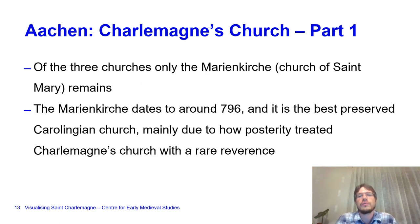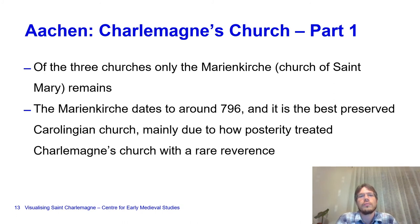Of the three churches, only the Marienkirche, the church of Saint Mary, survives; the other two have disappeared almost completely. The Marienkirche dates to around 796 and is the best-preserved Carolingian church. This is due to how posterity treated Charlemagne's church with rare reverence—whereas elsewhere they would have torn down parts or the whole building, here they felt compelled to preserve it. There was also no point in replacing it as Aachen never again achieved the wealth it had under Charlemagne.